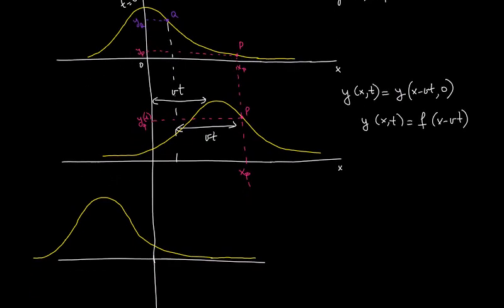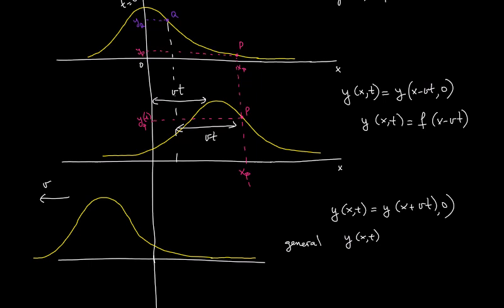When the pulse is moving to the left with velocity v, you can do the same analysis and you will see that y(x, t) equals y at (x + vt) at time equals zero. So in general, we can write y(x, t) = f(x ± vt). This is known as the wave function.